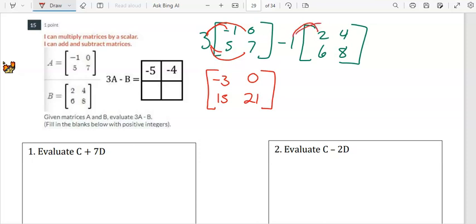And then we're going to distribute the negative 1 into each of these elements. We have negative 2, negative 4, negative 6, and negative 8. We can change it to a plus sign because we distribute the negative.